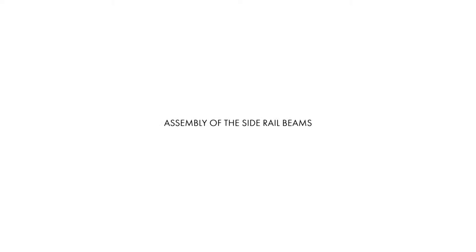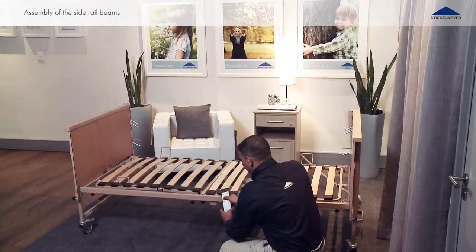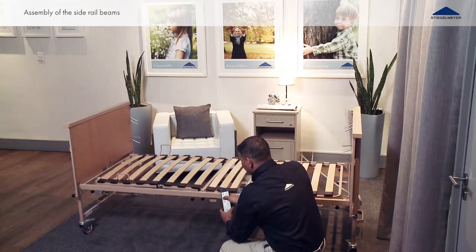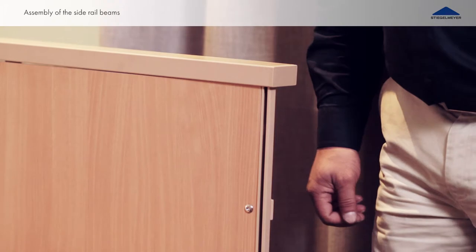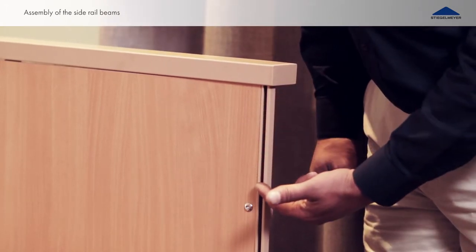To mount the side rails, the reclining surface frame must be set to the middle position. You will find a guide bar for the side rails on the left and right side of the end boards.